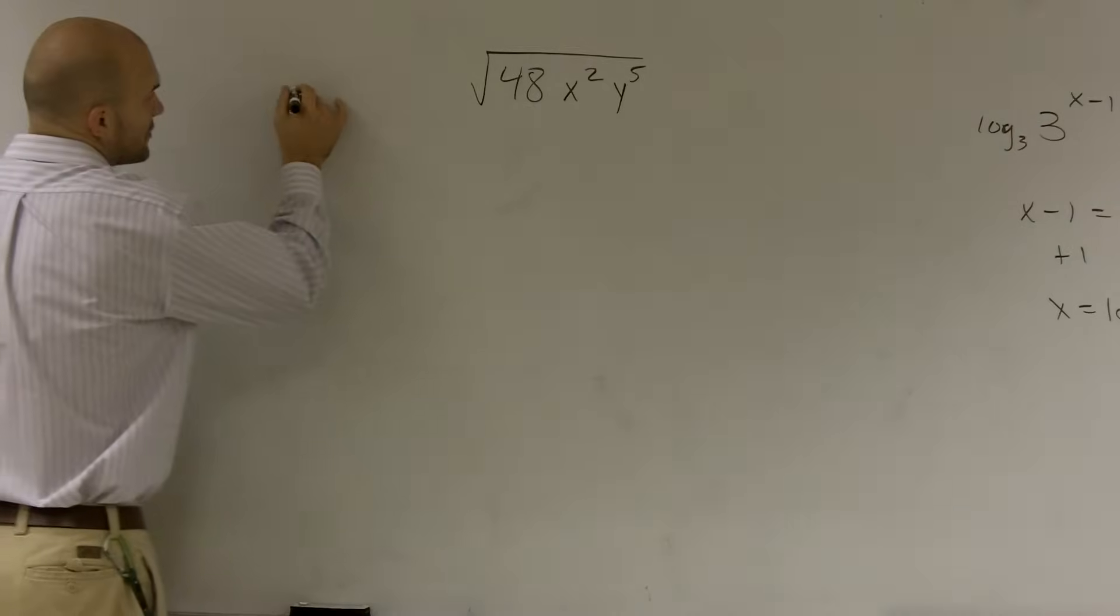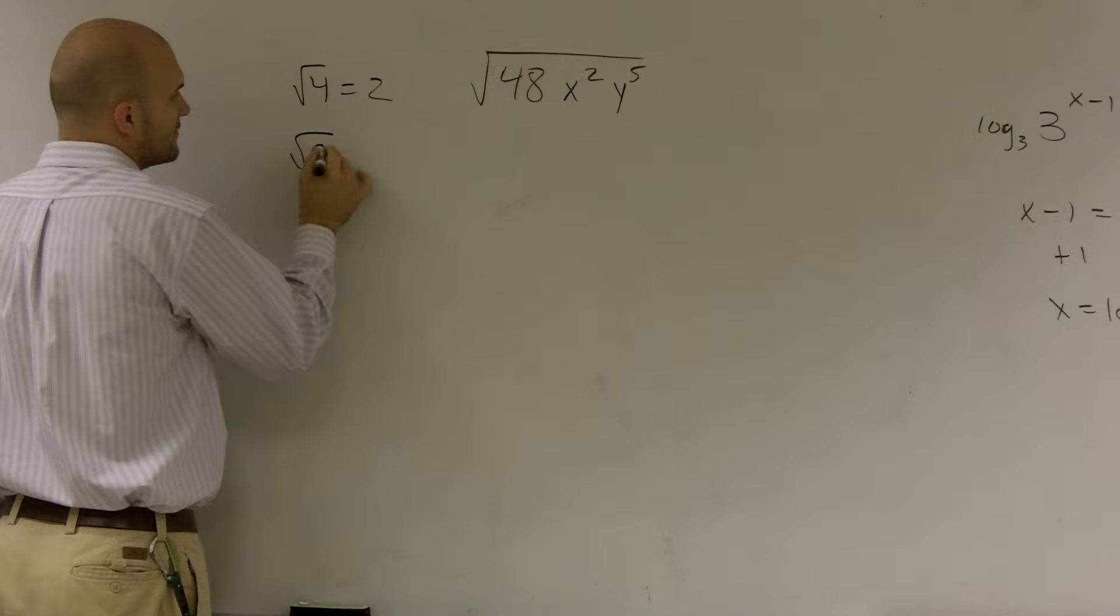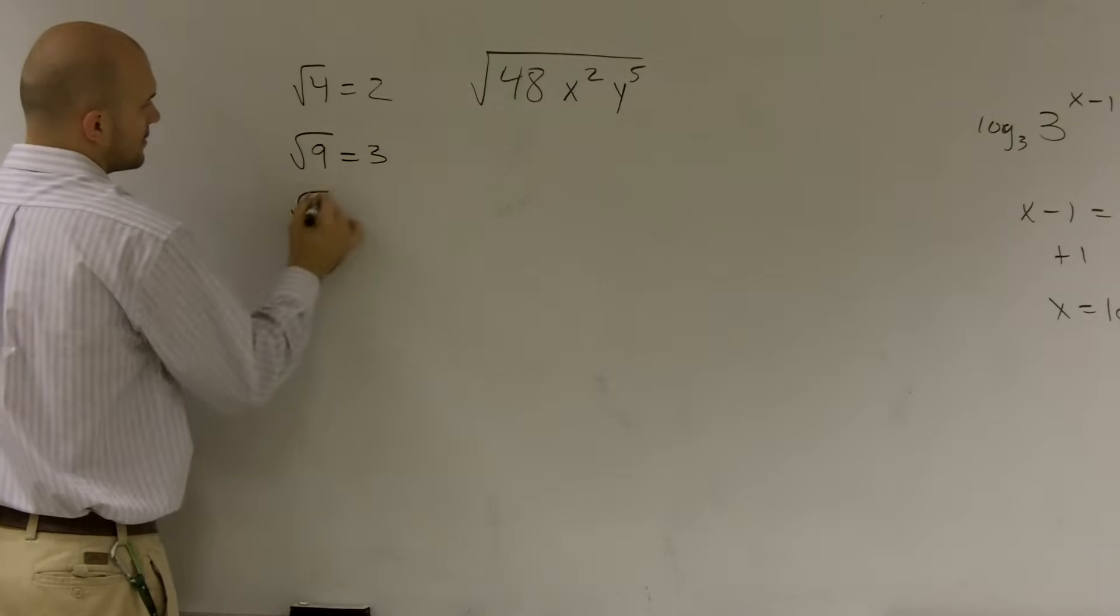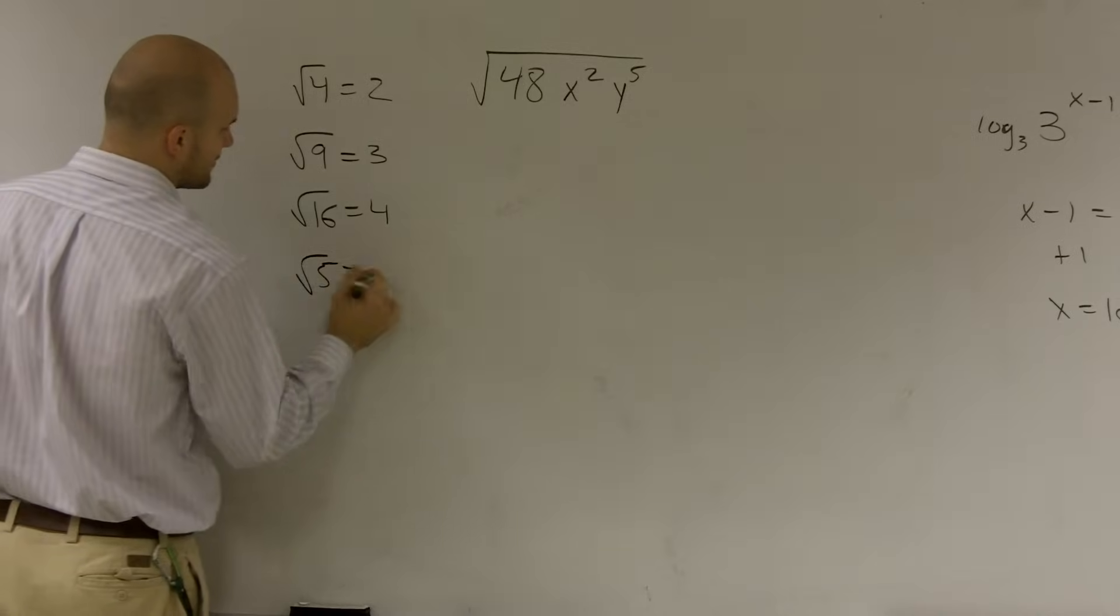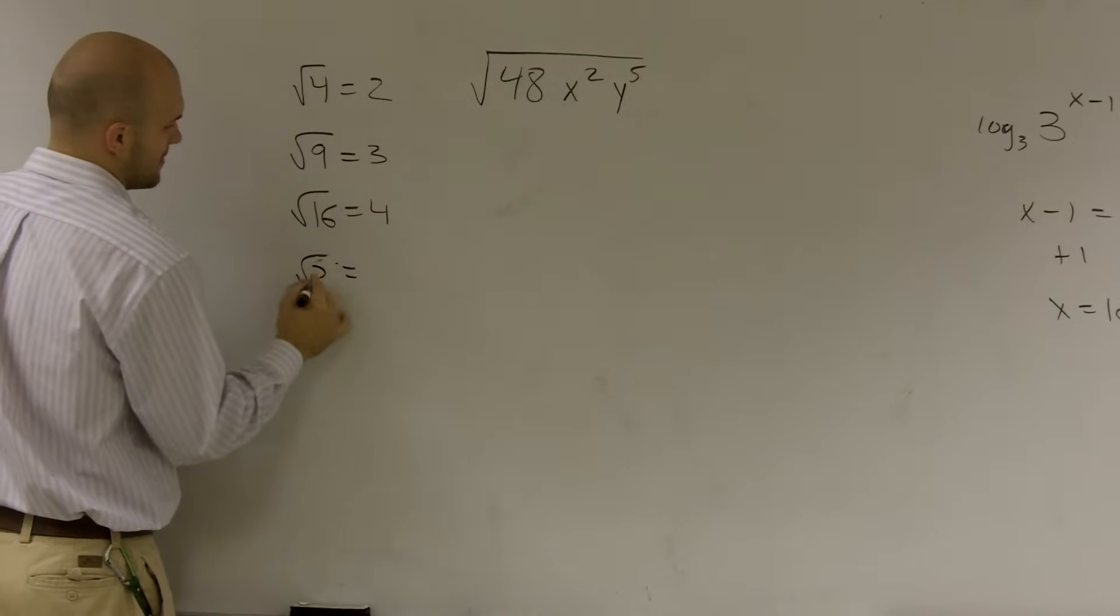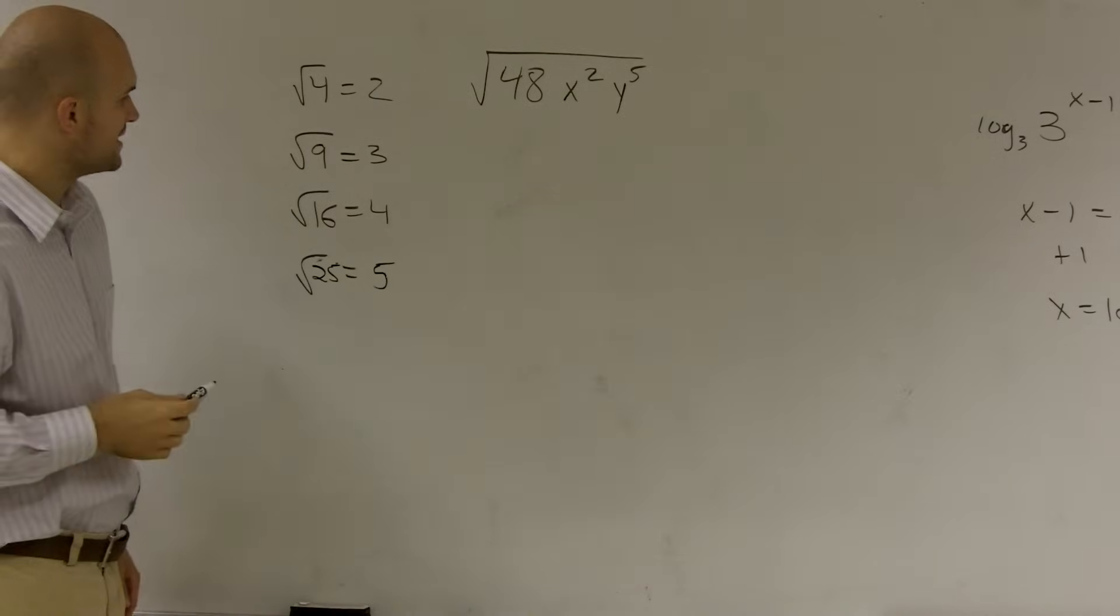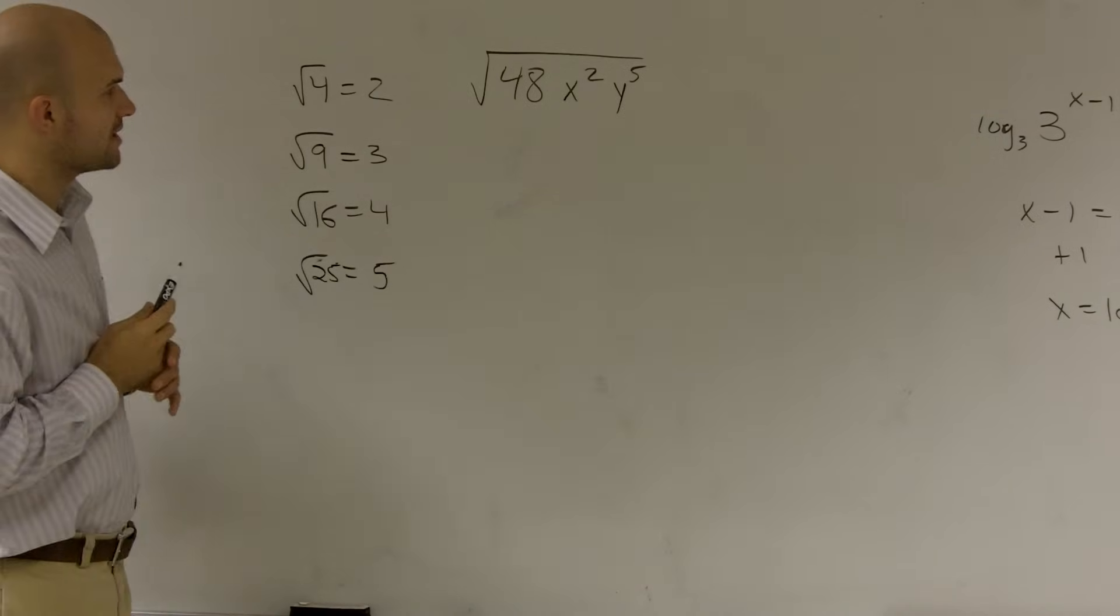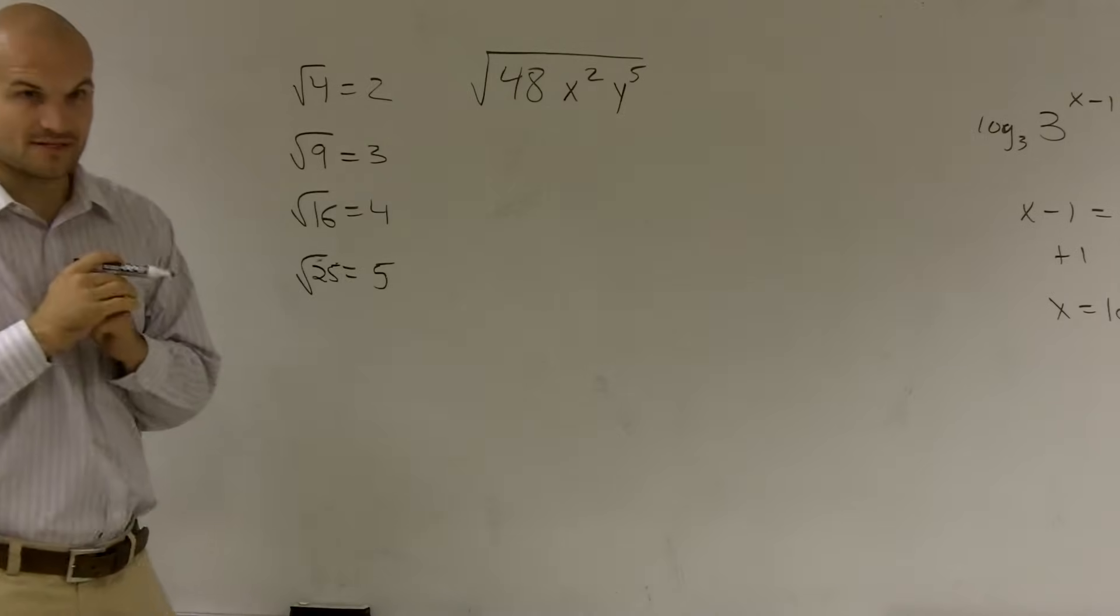You can take the square root of 4 equals 2, the square root of 9 equals 3, 16 equals 4, the square root of 25 equals 5. And for this problem, we're just going to deal with those numbers.